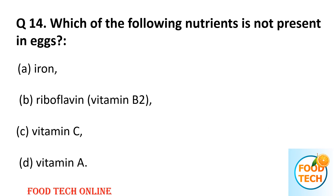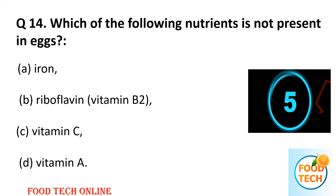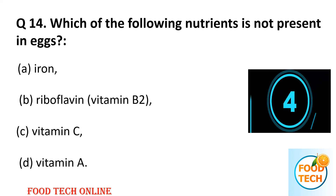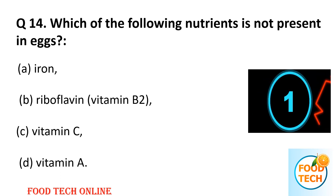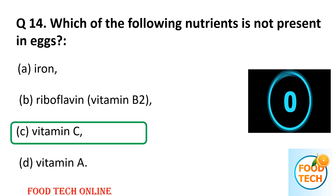Question 14: Which of the following nutrients is not present in egg yolks? A: iron, B: riboflavin, C: vitamin C, D: vitamin A. Answer: C, vitamin C.